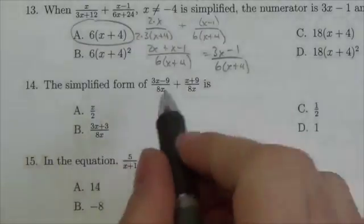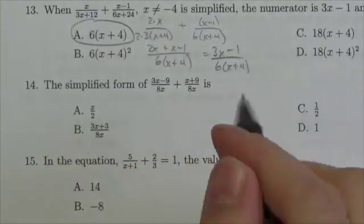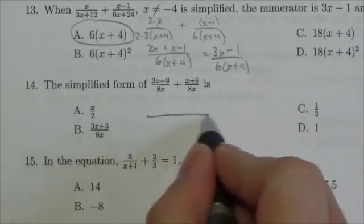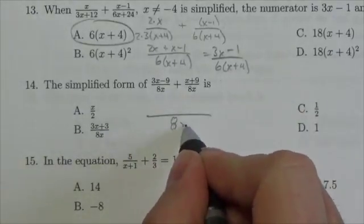This question asks for the simplified form of (3x - 9)/8x + (x + 9)/8x. Notice that the denominators are both the same—they're both 8x.